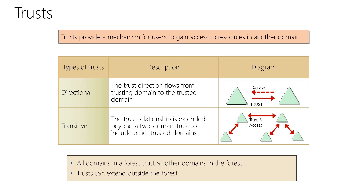The type of trust can be directional: the trust direction flows from the trusting domain into the trusted domain. Transitive trust is a trust relationship that is extended beyond a two-domain trust to include other trusted domains, as you can see in the picture. In short, all domains in a forest trust all other domains in the forest, and trust can extend outside the forest.